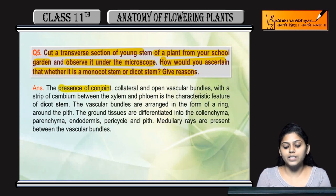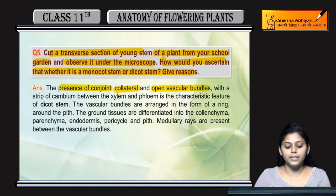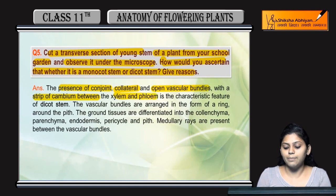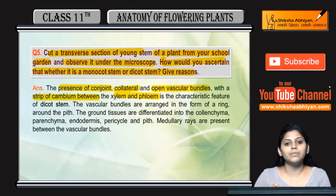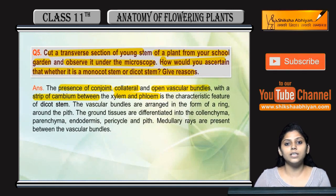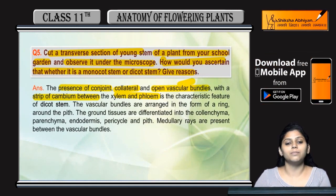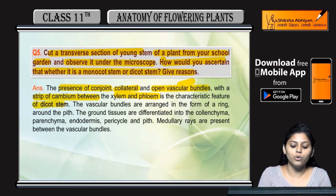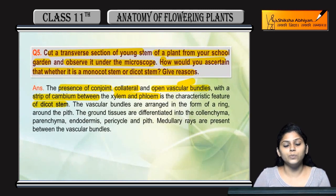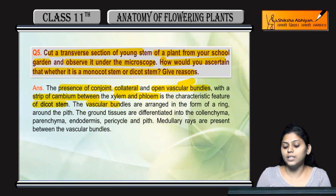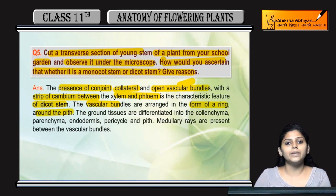If there is presence of conjoint, collateral, and open vascular bundle with a strip of cambium in between xylem and phloem, and the vascular bundles are arranged in the form of a ring, then it is a dicot stem.